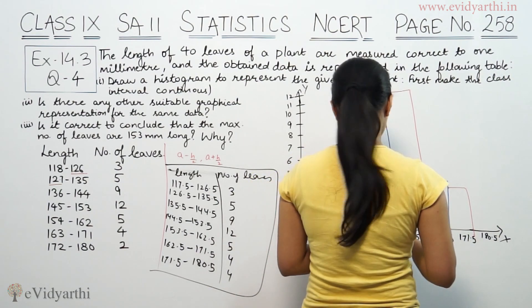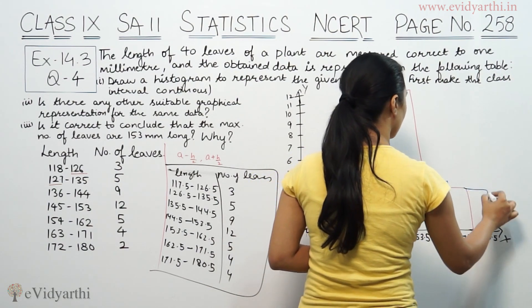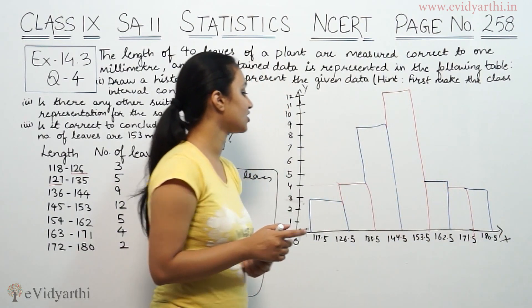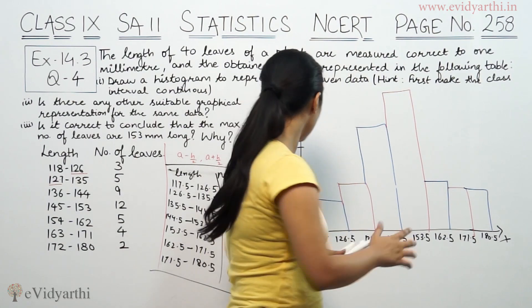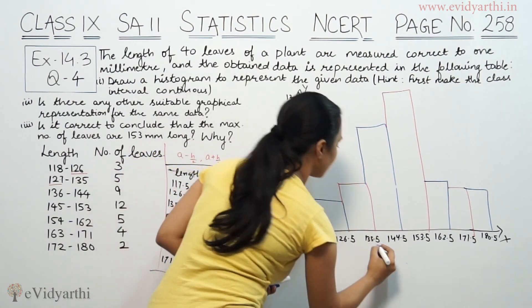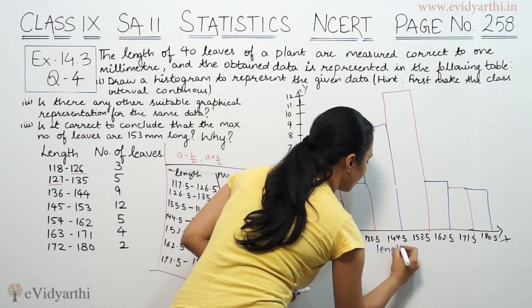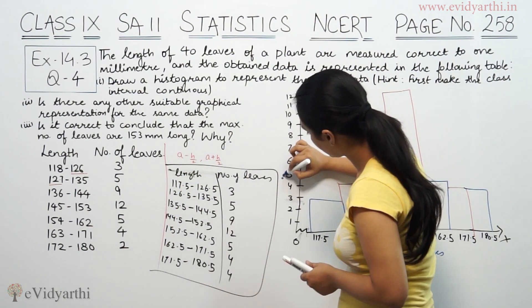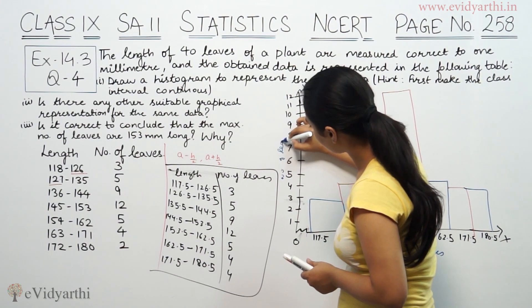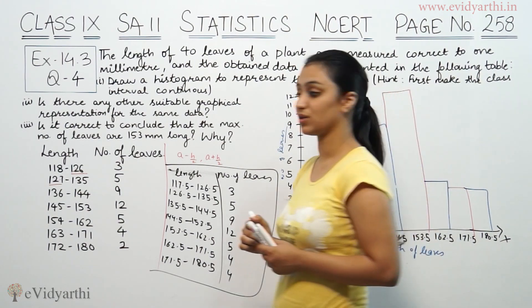This is the histogram. There is no gap between bars. The x-axis shows length of leaves and y-axis shows number of leaves. This is the histogram.